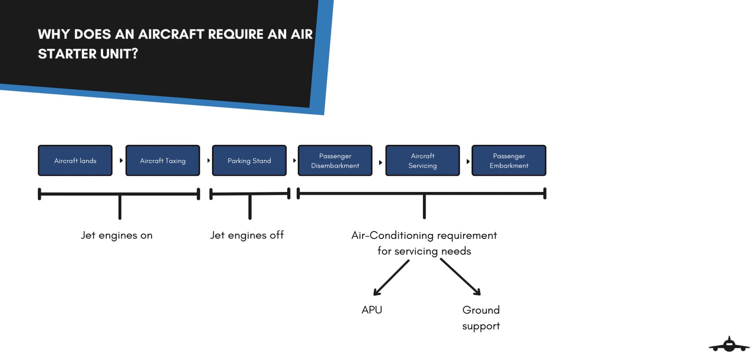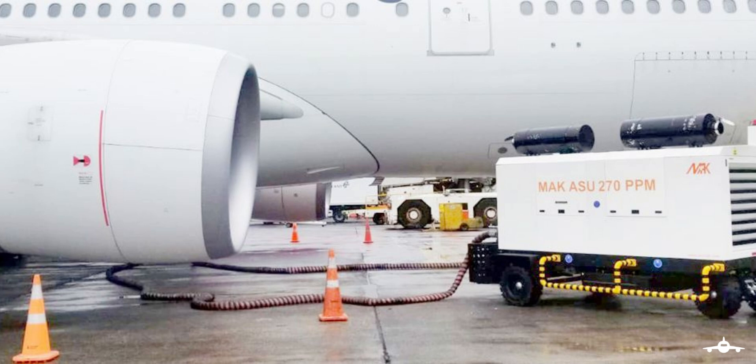So after the passenger embarkment for the next flight the aircraft is ready for departure. This is the time where an air starter unit is required. An ASU is a machine that supplies air pressure or air flow for starting the aircraft's jet engine.